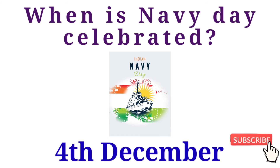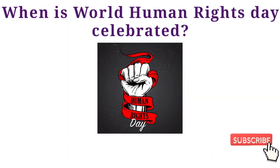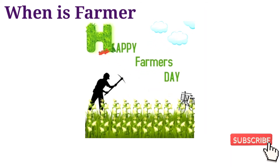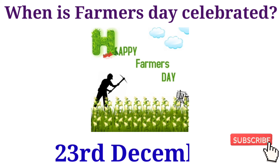When is Navy Day celebrated? Answer: 4th December. When is World Human Rights Day celebrated? Answer: 10th December. When is Farmers Day celebrated? Answer: 23rd December.